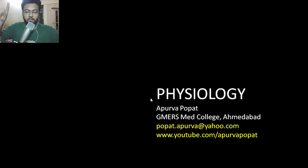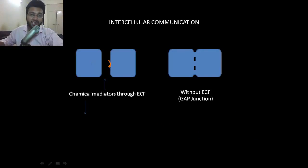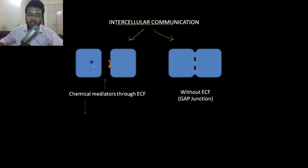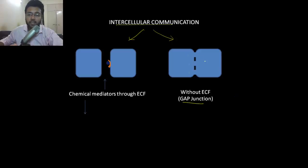Let's begin with intercellular communication. There are two ways by which two cells can communicate. One is that a chemical mediator is secreted by one cell, goes out into the extracellular fluid, and attaches to the receptor of another cell. The second method is by gap junction, where ions travel directly through the gap junction without going to the extracellular space.